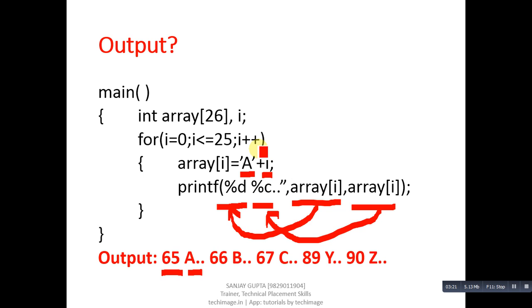Then i++ will be performed, so value of i is now 1. Again, 65 plus 1 will be 66, so %d will print 66 and %c will print B. Similarly 67 and C, and so on. In this program, ASCII values are printed with %d and %c on console.